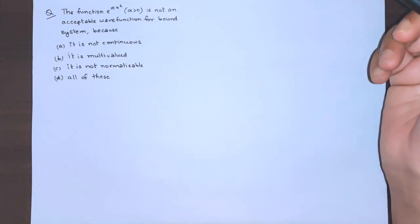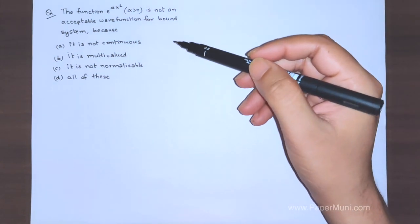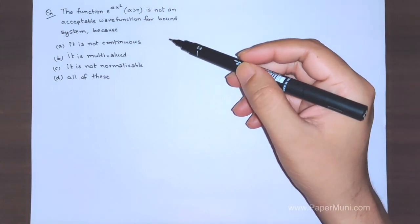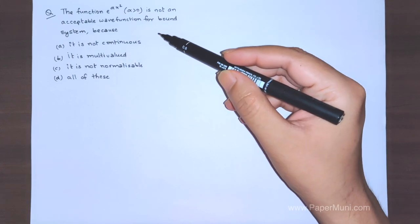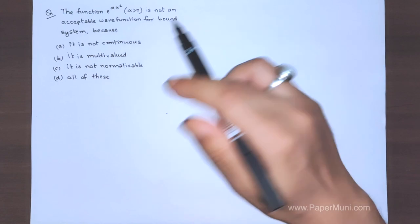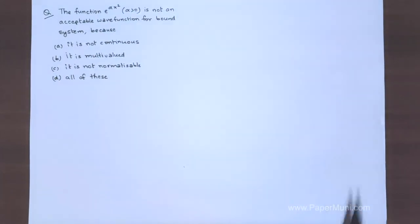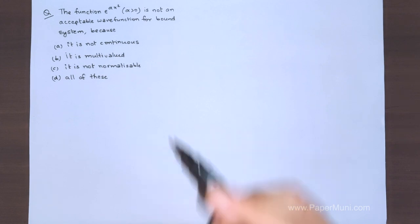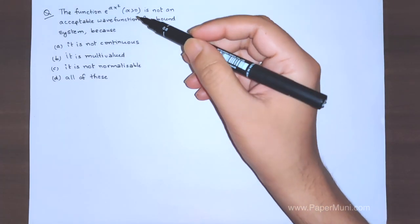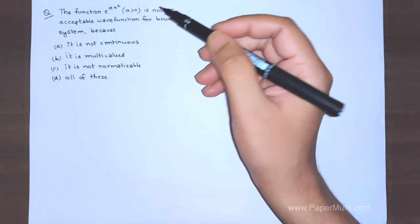Hello everyone, welcome to another lecture on quantum mechanics. In the last lecture we learned about the criteria for well-behaved or acceptable wave functions. In this lecture we will solve a problem and try to understand how to distinguish between an acceptable wave function and a non-acceptable wave function.